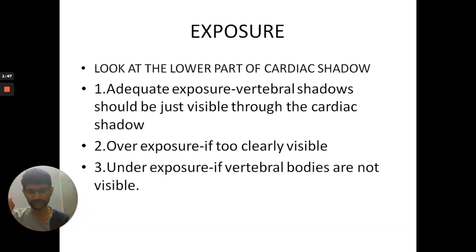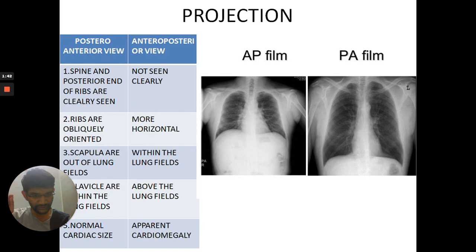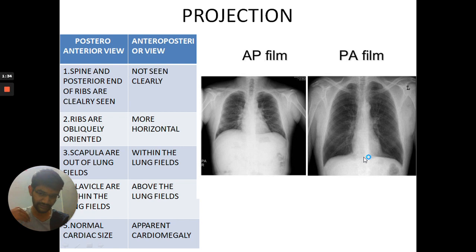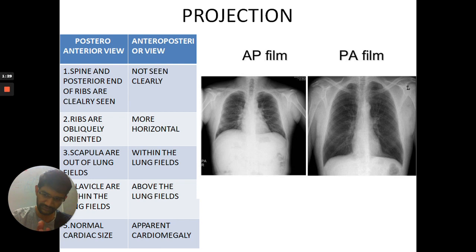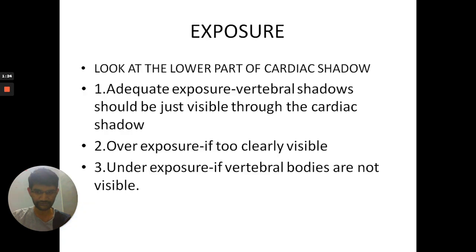Next comes exposure. To check whether the X-ray is adequately exposed, look at the lower part of the cardiac shadow. If the vertebral bodies are very clearly visible through the cardiac shadow, then it is overexposed.